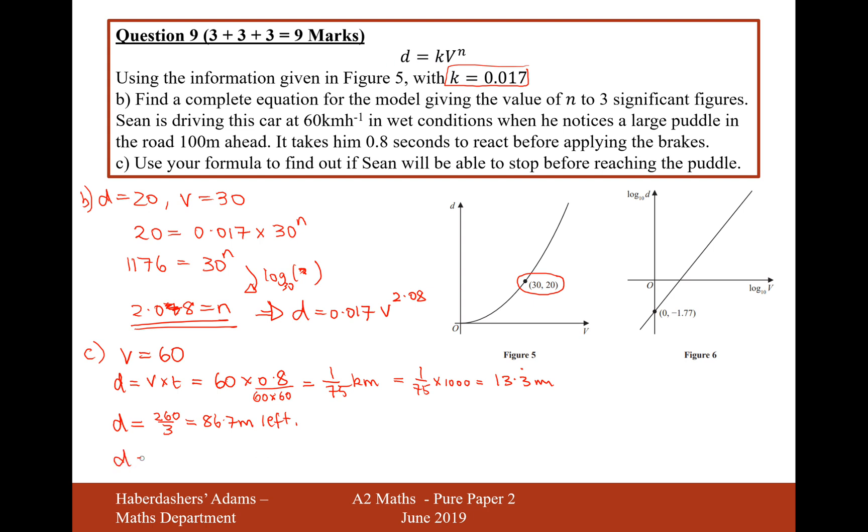So it's going to be d equals 0.017 times the speed of 60 to the power of 2.08. Let's see if that's bigger or less than 86.7. I'll type this into my calculator: 0.017 times 60 to the power of 2.08, and that gives him 84.9. That will be the braking distance, and he had 86.7 meters left. So yes, Sean will stop in time.